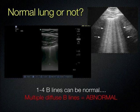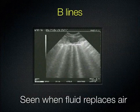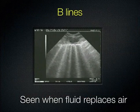Here is an in-motion picture of what B-lines look like. The fluid is replacing the air — it looks like a light show. There are multiple B-lines going all the way to the edge of the screen, and the A-lines have disappeared.